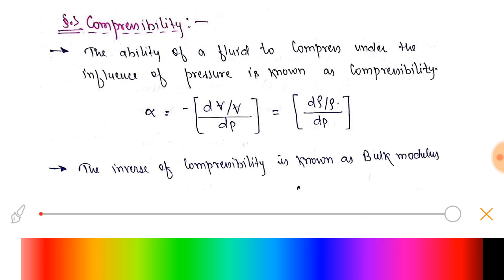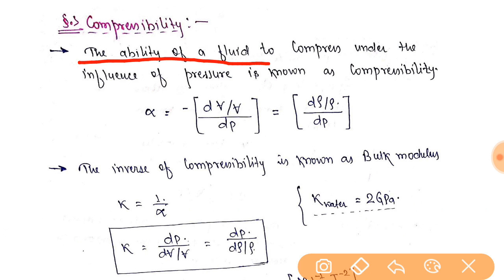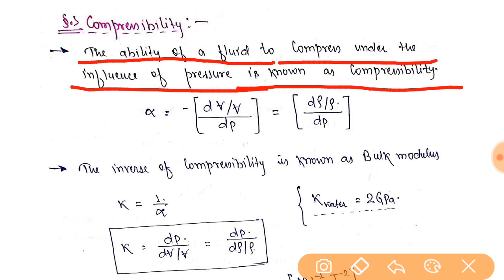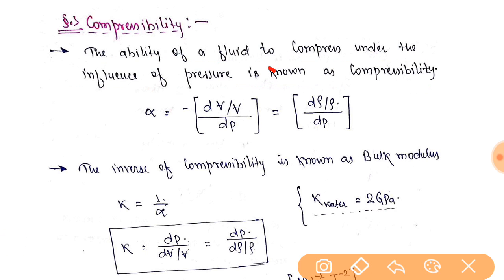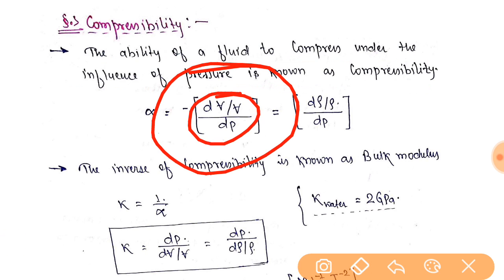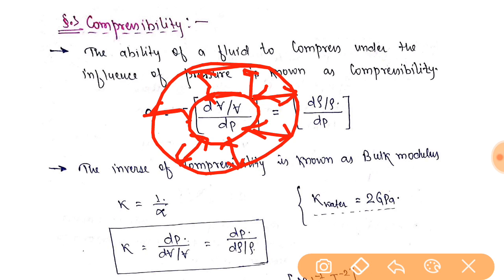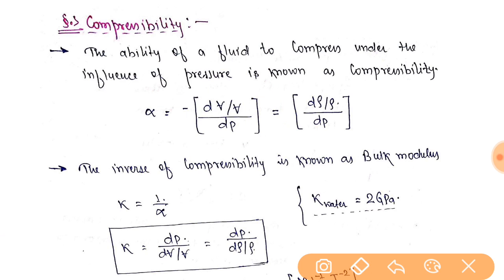Let's start the video. Compressibility kya hoti hai — the ability of a fluid to compress under the influence of pressure is known as compressibility. So what is compressibility? The ability to compress means the ability to decrease its volume. The capacity of a fluid to decrease its volume is called compressibility. We denote it by alpha. Alpha is equal to -dV/V divided by dP.